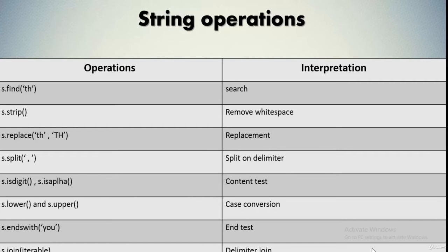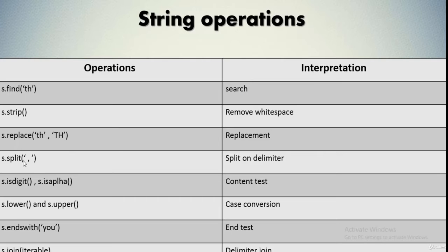There are various operations available over strings. The first is find — using the find operation, you can find a particular sequence of characters and at which index it is present, using the variable name, dot operator, and the find keyword with the character you are searching for. Similarly, we have the strip operator, which removes white spaces from the string. Then we have the replace operation — we can replace a particular sequence of characters with another, for example replacing lowercase 'th' with uppercase 'TH'. Next is the split operator, which splits your sequence on the basis of a delimiter you supply as a parameter.